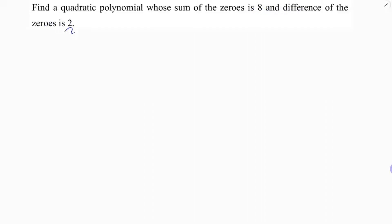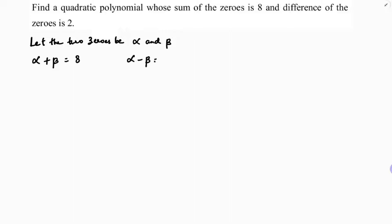Find a quadratic polynomial whose sum of the zeros is 8 and difference of the zeros is 2. Let the two zeros be alpha and beta. The given conditions are: sum of the zeros, alpha plus beta, is 8, and alpha minus beta is 2.